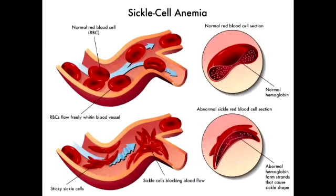The reason for the crew cut sign is increased erythropoiesis occurring in areas where it normally shouldn't. Normally, there is very little erythropoiesis in the bones of the skull. But in sickle cell anemia and thalassemias, there is a higher demand for red blood cell production, so the body produces them anywhere it can, resulting in that crew cut sign.